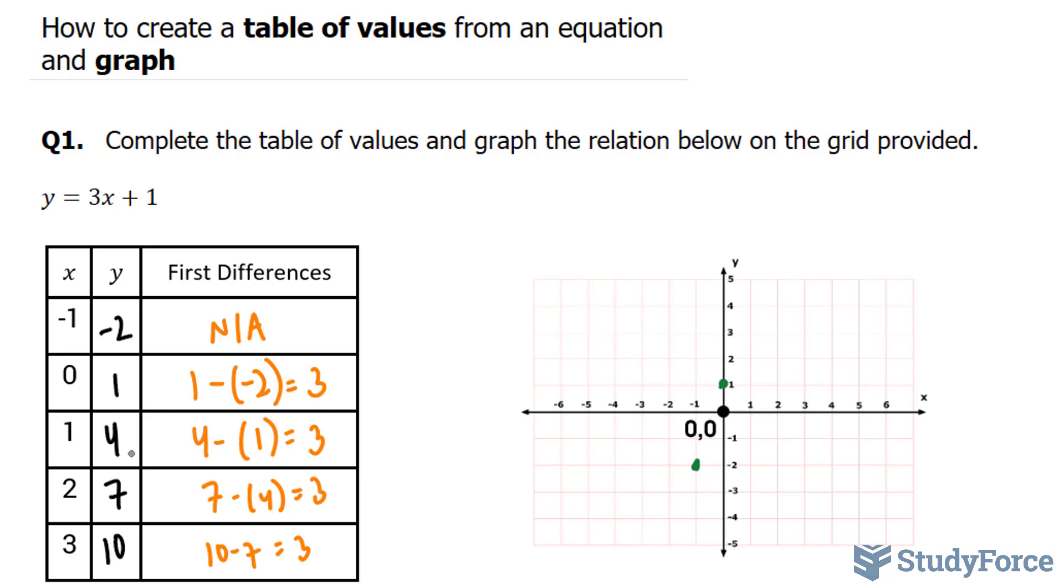Our next point will be 1 and 4, so 1 and 4 is over here. Our next point is 2 and 7, which will be off the grid. And if we connect these points without graphing this last one, we end up with a straight line.